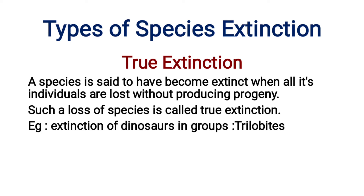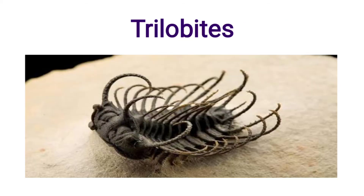Types of species extinction. First, true extinction: a species is said to have become extinct when all its individuals are lost without producing progeny. Such a loss of species is called true extinction. For example, extinction of the Devonian group known as trilobites. This is the fossil of trilobites.